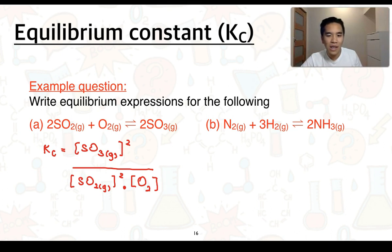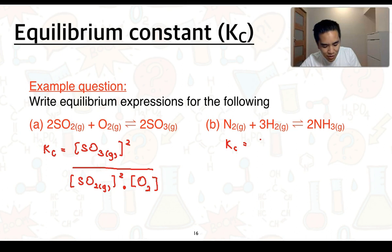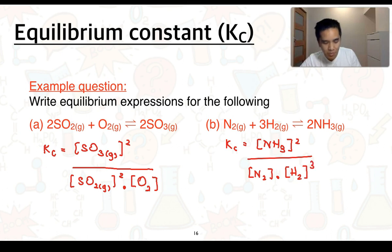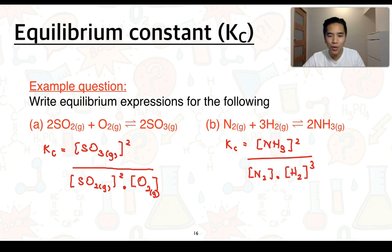For part B, the reaction between nitrogen and hydrogen gas to produce ammonia: Kc = [NH3]² / ([N2] × [H2]³). Note that in both examples, whether or not you include the physical states in the equation doesn't really matter when writing your equilibrium expression. That concludes part 1 of this video series — see you in the next video.